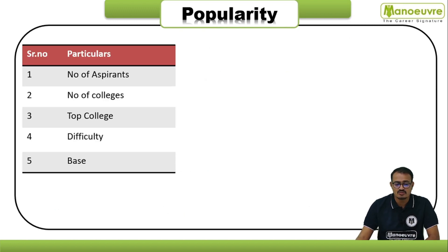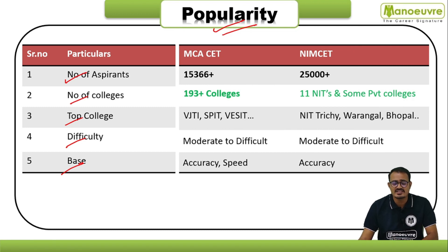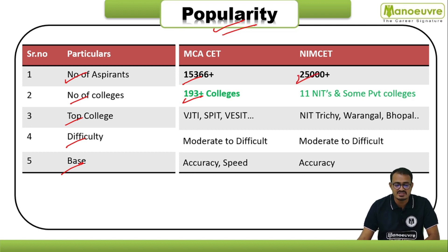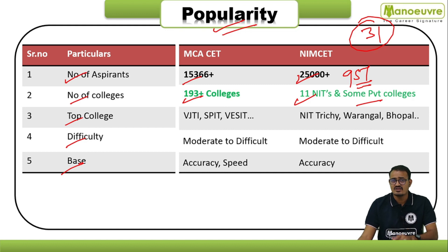Regarding popularity: for MCA CET, 15,366 plus candidates appear and there are 193 plus colleges. For NIMCET, 25,000 plus candidates appear each year, competing for admission into 11 NITs with only 951 seats available. Out of 31 NITs, only 11 accept the NIMCET score, along with some private colleges and central universities.